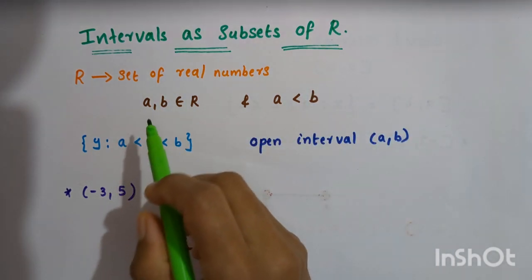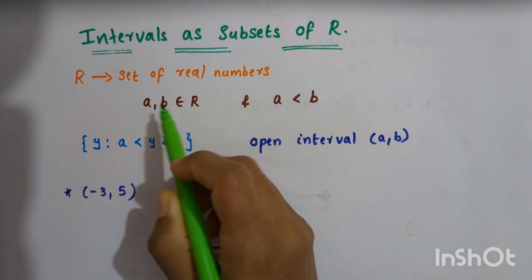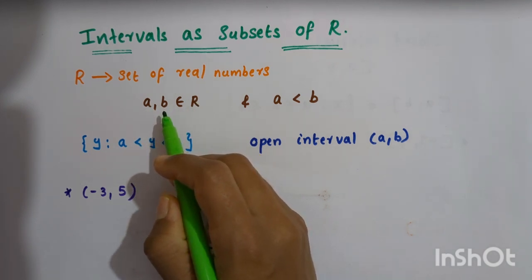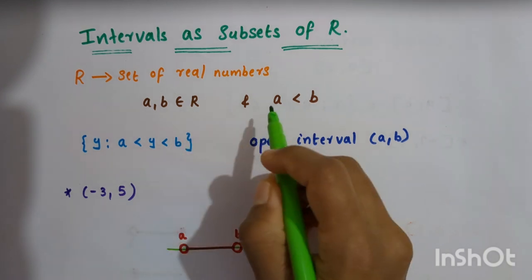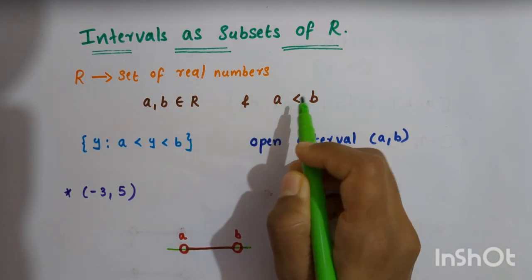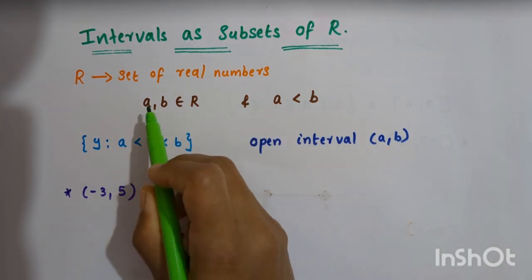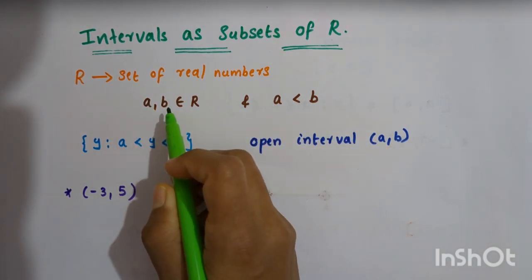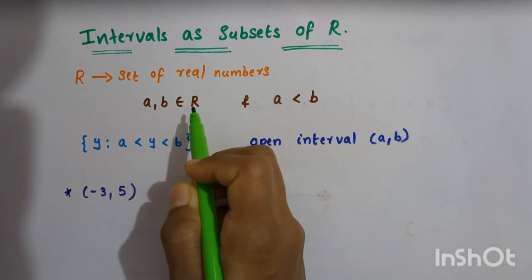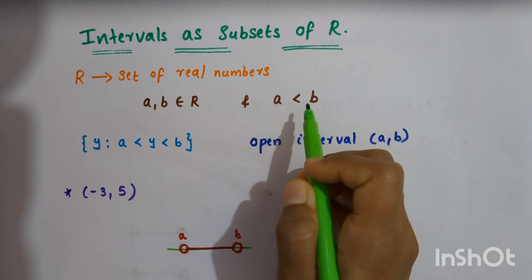Let small letters a and b belong to R. a is an element in the set R, b is also an element in the set R, and it is given that a is less than b. For example, if a is equal to 3 then b is equal to 5 — both are in the set of real numbers and a is 3, so 3 is less than 5.